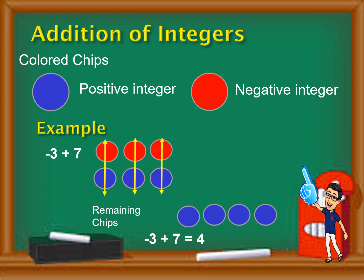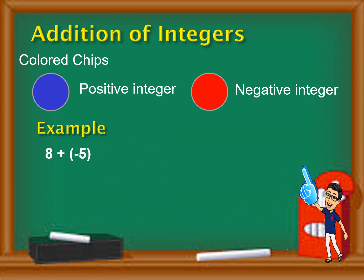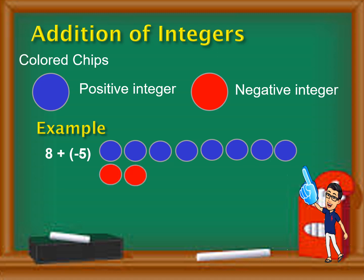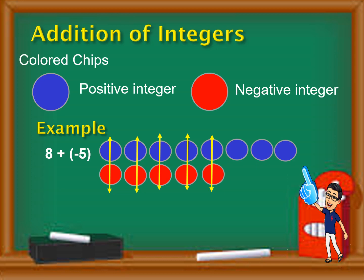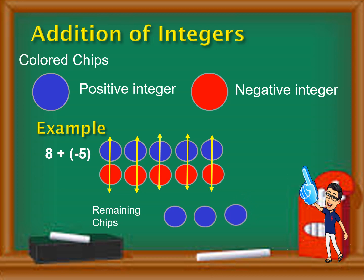I hope you understand. Proceed with the next example: eight plus negative five. We need eight blue chips because eight is positive, and five red chips because five is negative. The zero pairs are matched: one, two, three, four, and five — since they are pairs, they have no value. The remaining chips are one, two, three blue chips, equivalent to positive three. Therefore, eight plus negative five is equal to three.